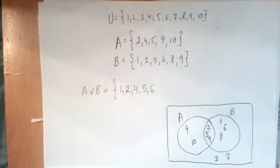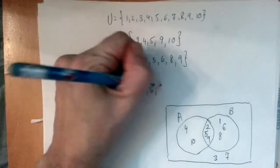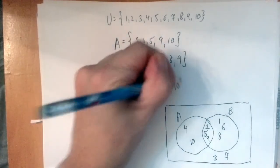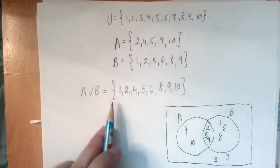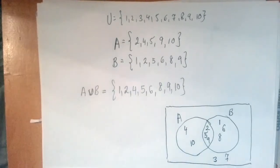Six is in B. Again, seven is nowhere to be found. So, seven does not make it into the union. And then eight is in B. Nine is in both. And ten is in A. So, this is the set that we get when we throw together A and B. This is called the union of A and B.